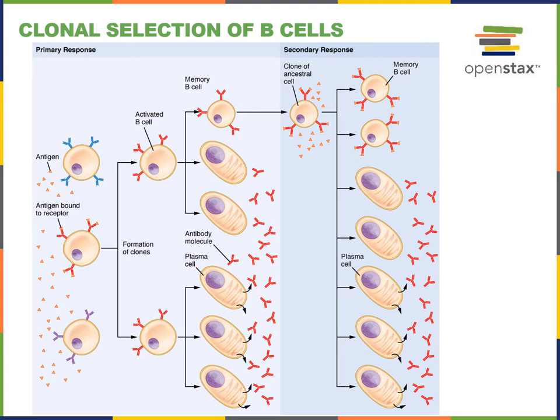The plasma cells are secreting antibodies, and the antibodies are then responsible for antibody mediated immunity. When antibodies bind to antigen on the surface of a pathogen, they can help label that pathogen to direct the innate immunity to help defend against that specific pathogen. So the innate immunity can be recruited by the adaptive immunity.